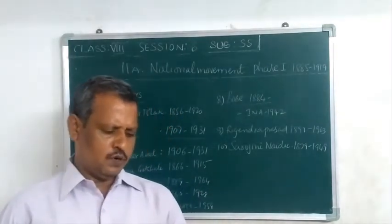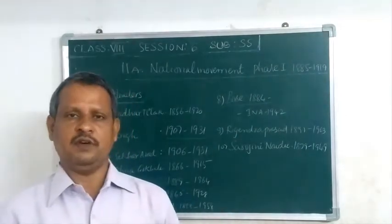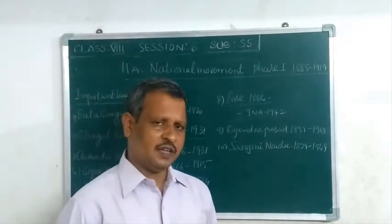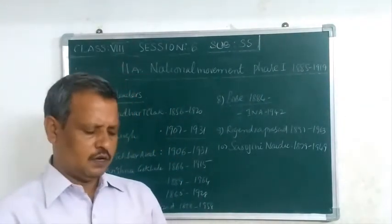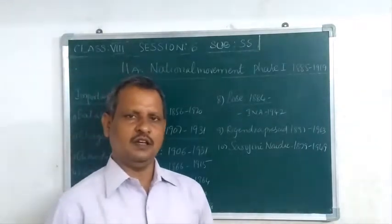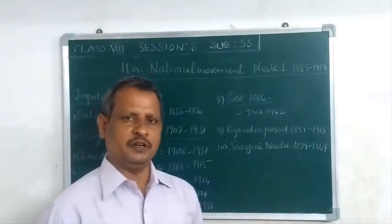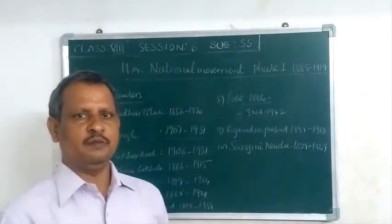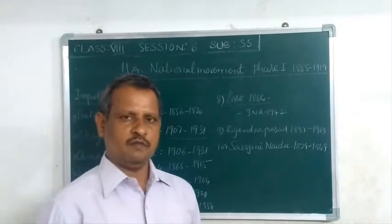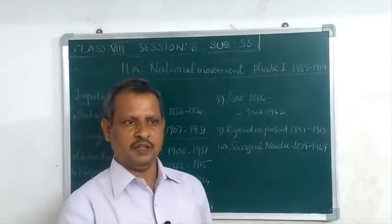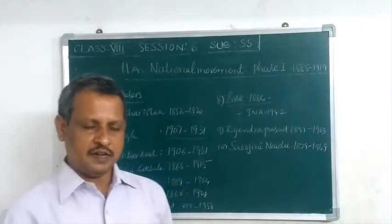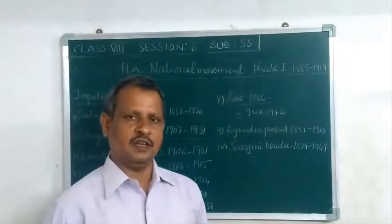Surendranath Banerjee and Anand Mohan Bose addressed huge mass meetings attended by about 75,000 people against the partition of Bengal. Coming to the Indian National Congress, its main objective was to mobilize the entire people of India.